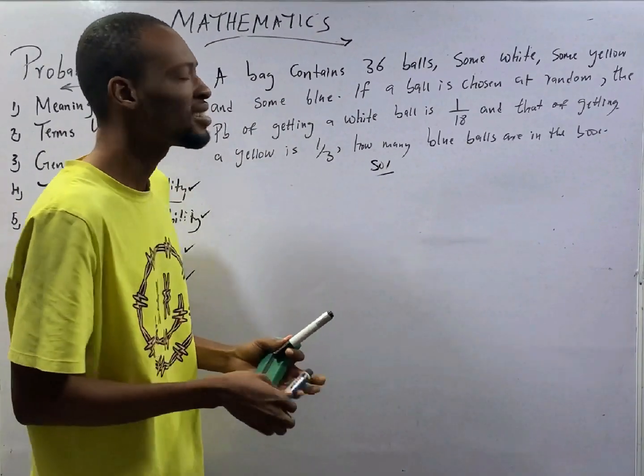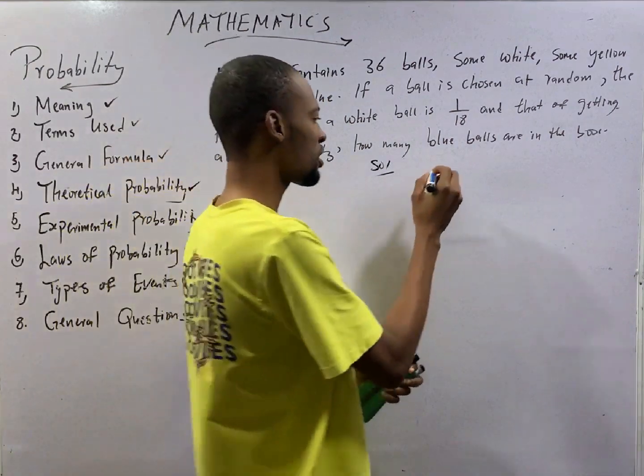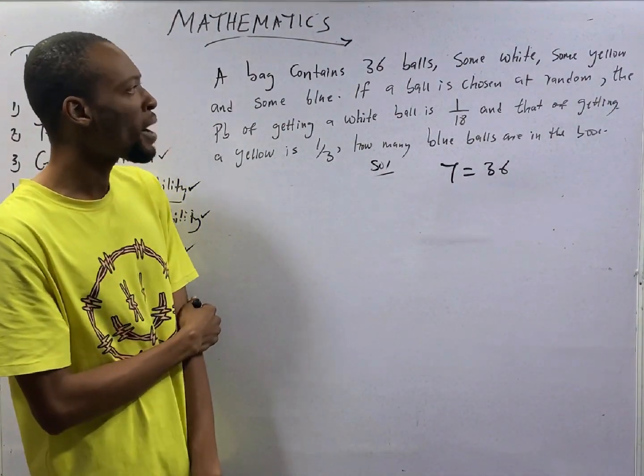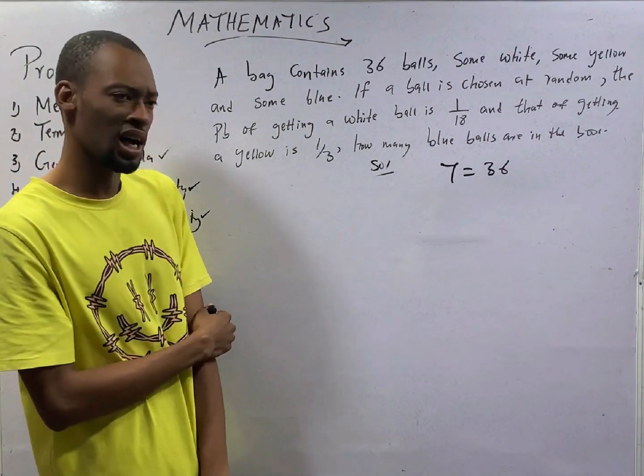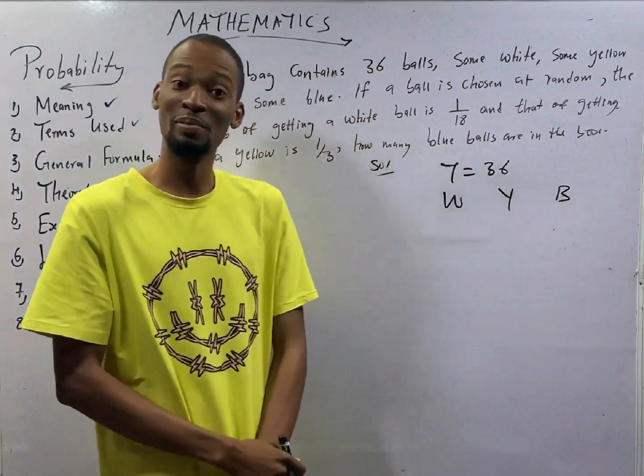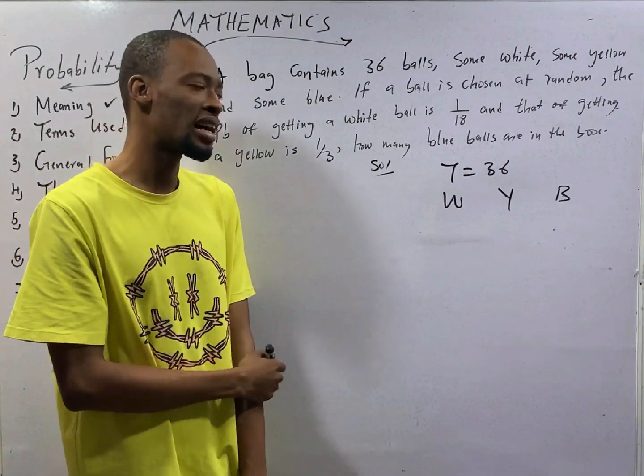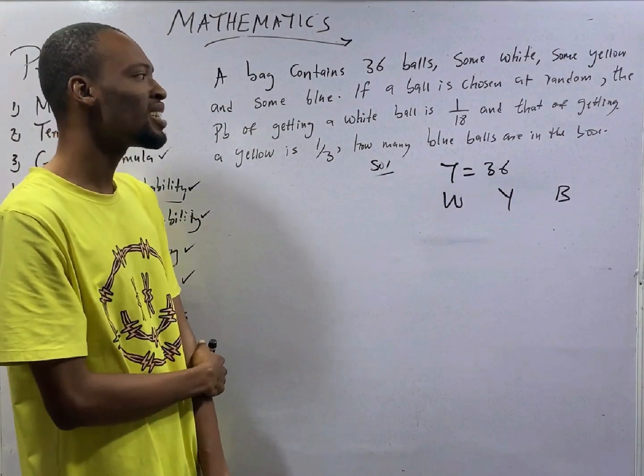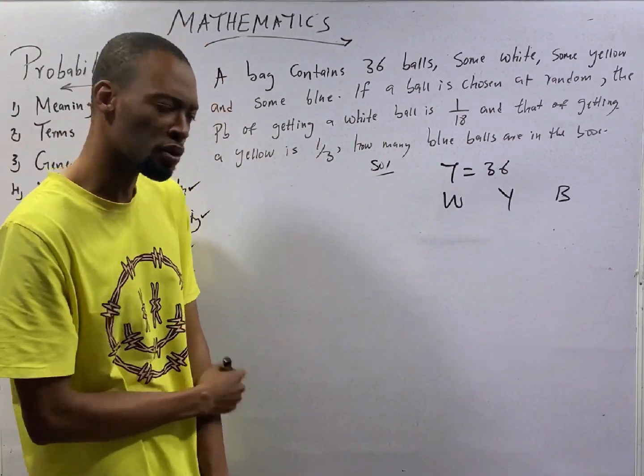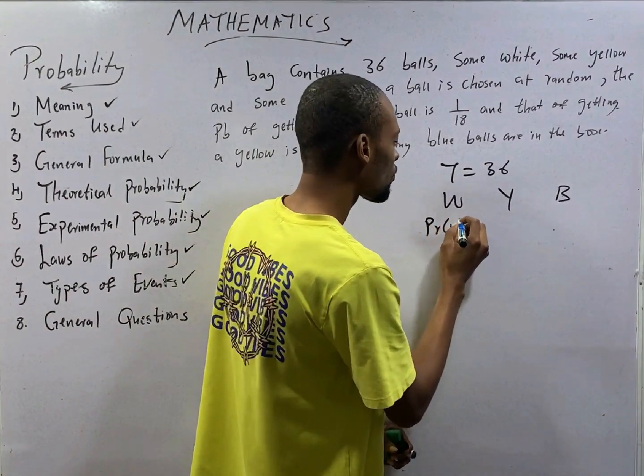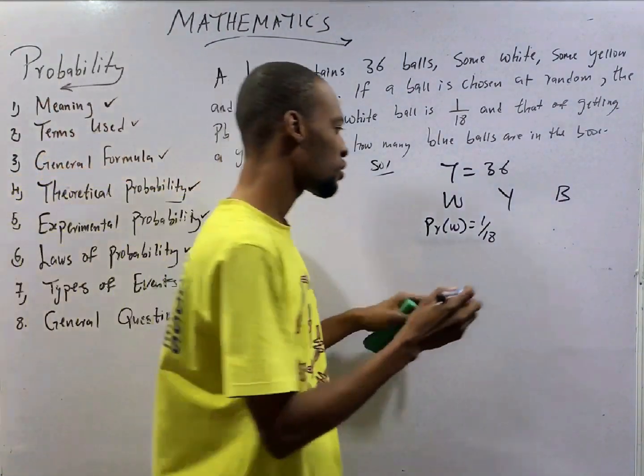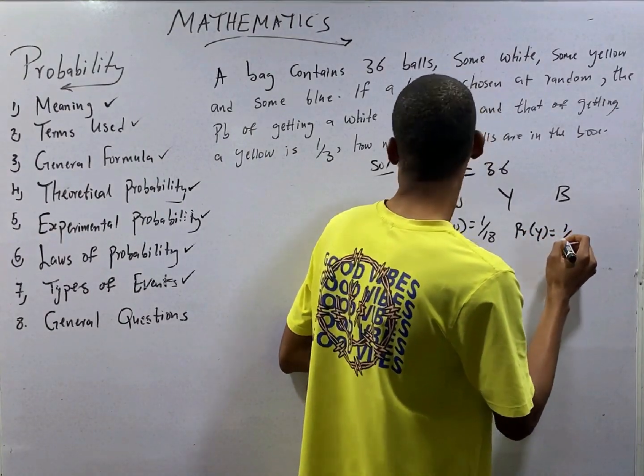A bag contains 36 balls. Now, out of these 36 balls, some are white, some are yellow, and some are blue. Meaning we have white, yellow, and blue balls. If a ball is chosen at random, the probability of getting a white ball is 1 over 18. Now, they gave us probability of white ball. So the probability of white is 1 over 18. And that of getting a yellow is 1 over 3. So probability of yellow is 1 over 3.